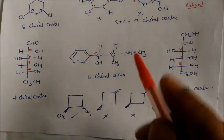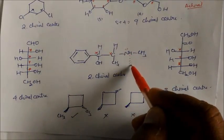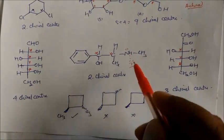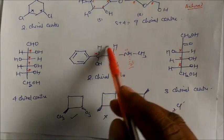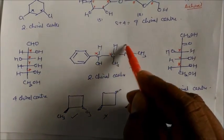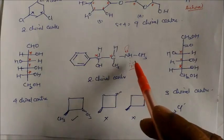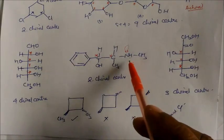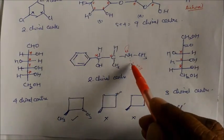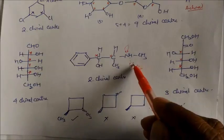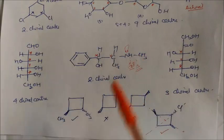Now, if you look at ammonia, it has sp3 hybridization. This amine is also sp3 hybridized and it has one hydrogen, one CH3, and one different group, with one lone pair. But still, this cannot be called chiral. Because in this case the situation is different — we will talk about it later. Why is this sp3 with different groups but not called chiral? We will explain this.